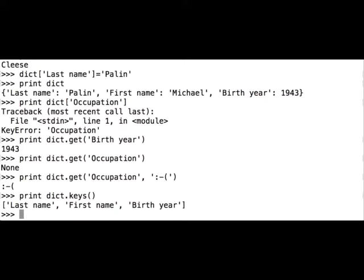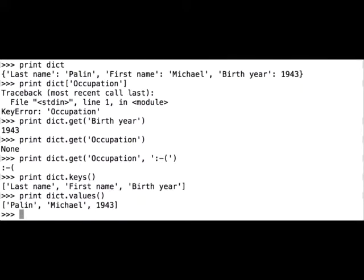If we want to extract all the values in a dictionary and put them in a list, we can use the values method. So print, dict, values, open and close brackets. And now the program returned values from our dictionary.